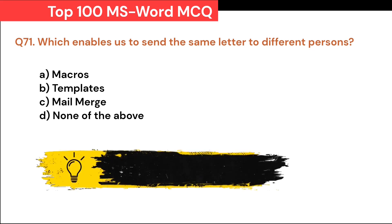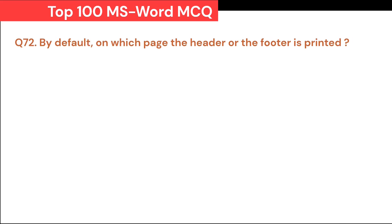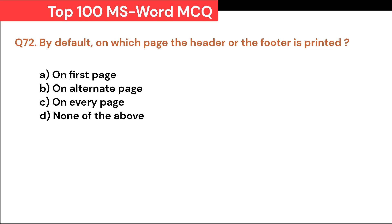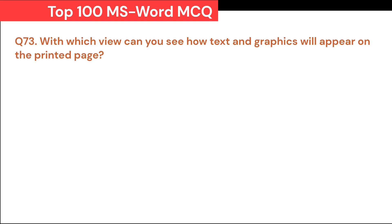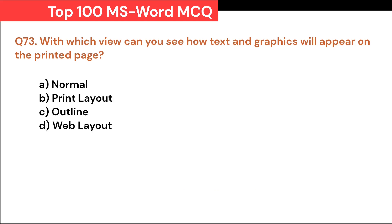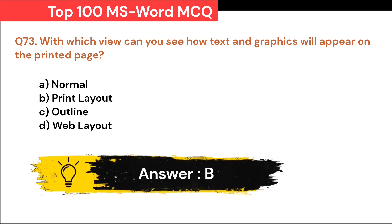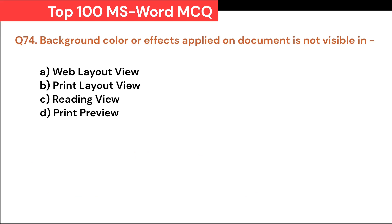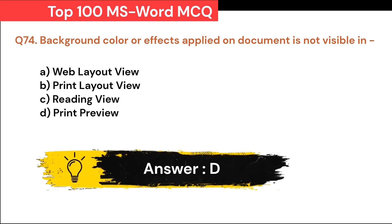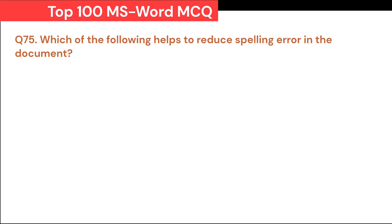By default, on which page is the header or footer printed? A. On first page. B. On alternate page. C. On every page. D. None of the above. Correct answer is C. On every page. With which view can you see how text and graphics will appear on the printed page? A. Normal. B. Print Layout. C. Outline. D. Web Layout. Correct answer is B. Print Layout. Background color or effects applied on a document are not visible in: A. Web Layout view. B. Print Layout view. C. Reading view. D. Print Preview. Correct answer is D. Print Preview.